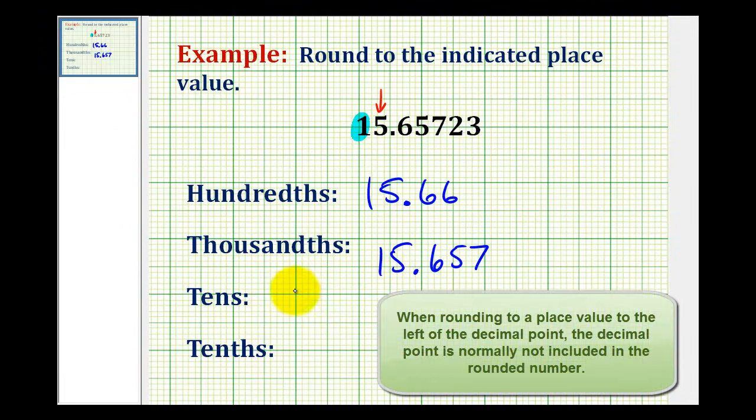So we increase this one to a two, so this rounds to twenty. Now notice on this example, we did have to include this zero here because we were to the left of the decimal. So rounded to the tens, this number rounds to twenty.